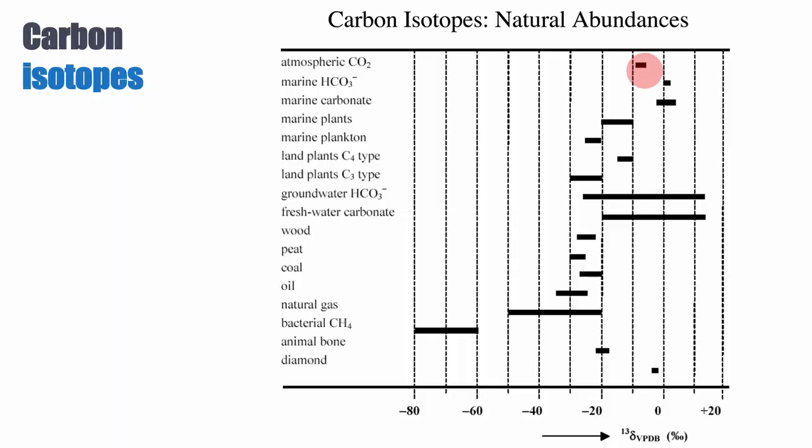We haven't really talked about carbon isotopes yet. Carbon can be a bit more complicated. The ultimate source of carbon is the mantle, and it's volcanic degassing. That source is at roughly minus 5 per mil PDB, so slightly negative.